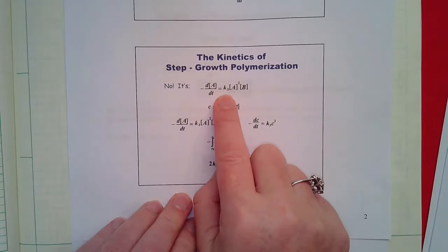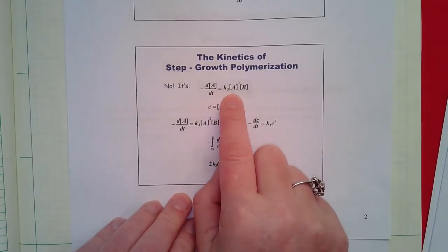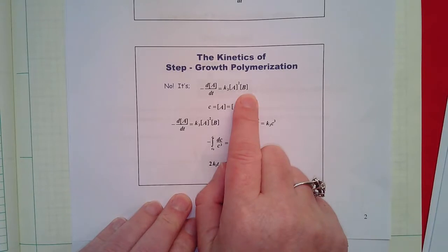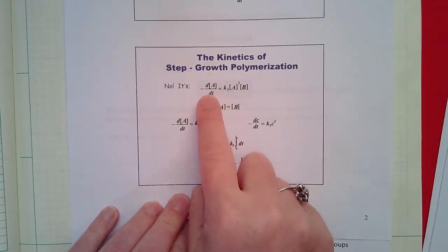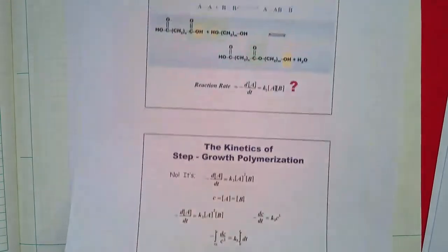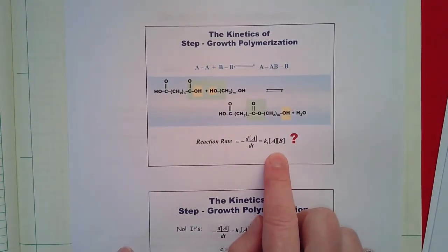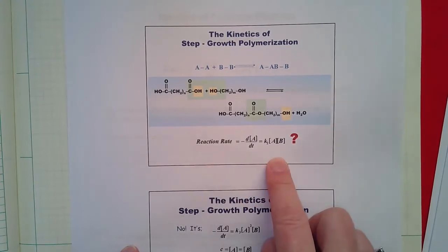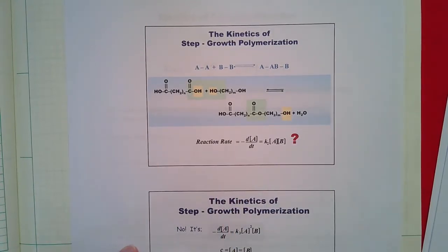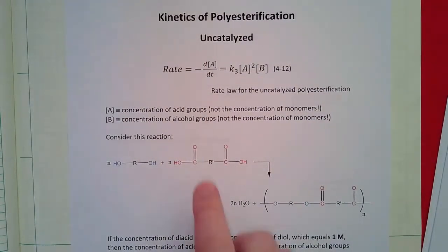Experimentally, it's been shown that it's a third-order, not a second-order, rate law. It depends on the concentration of acid squared times the concentration of alcohol. It's really important that even though this seems logical when we look at the reaction, you always have to experimentally verify and determine these rate laws. In this class, you will always be given an experimentally determined, validated rate law for both step growth and chain growth polymerizations.